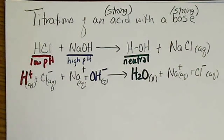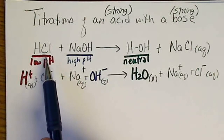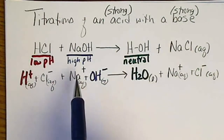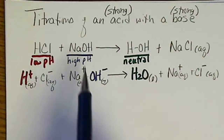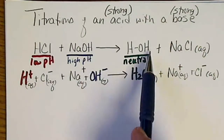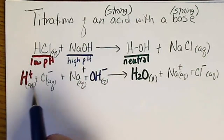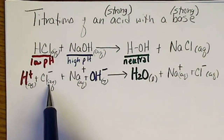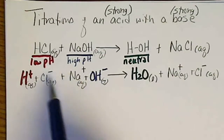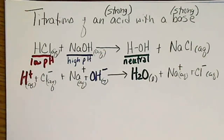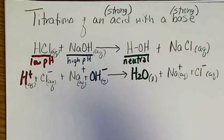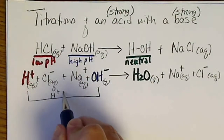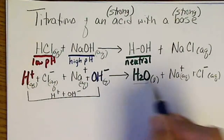Remember, a strong acid has no equilibrium established — there's 100% dissociation into H⁺ and the conjugate base. The same is true with a strong base: 100% dissociation. So writing the complete ionic equation, we take each ionic compound and break it up into its ions. Our beaker of HCl would contain the dissociated ions, and the same with sodium hydroxide. The net ionic equation for any acid-base reaction is always H⁺ + OH⁻ giving us H₂O.